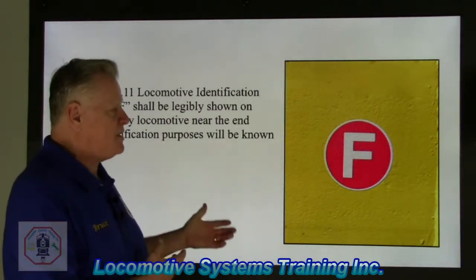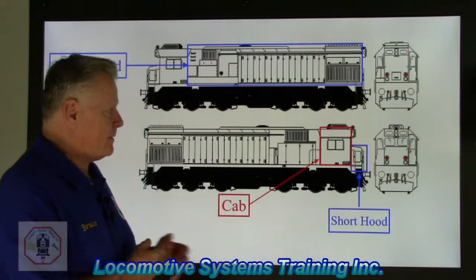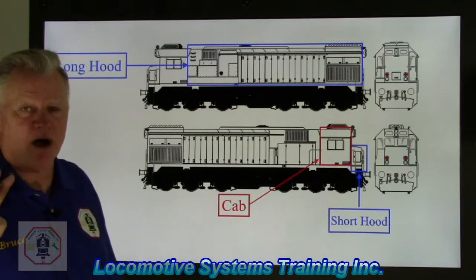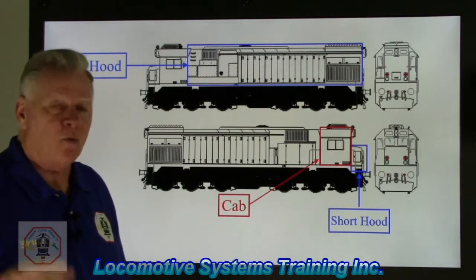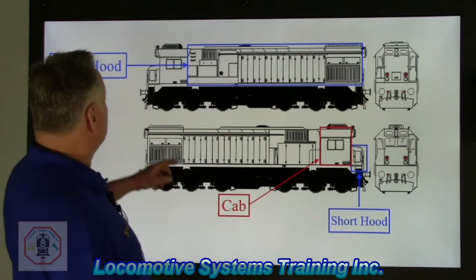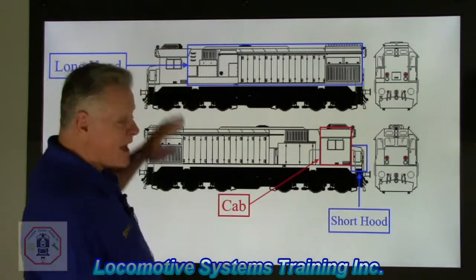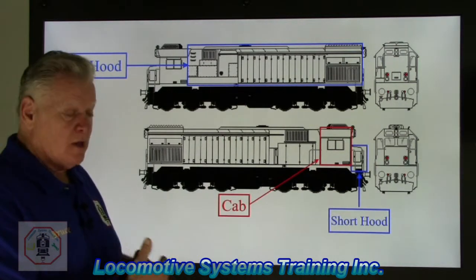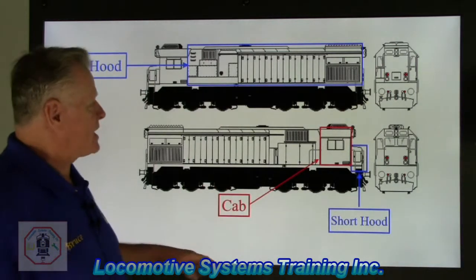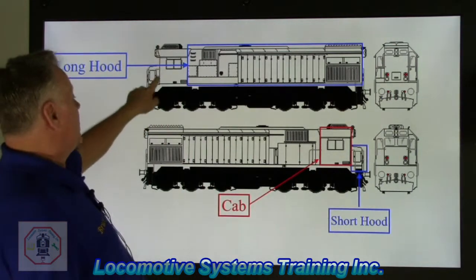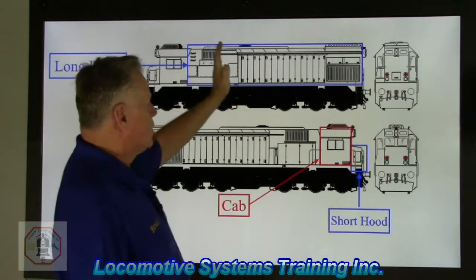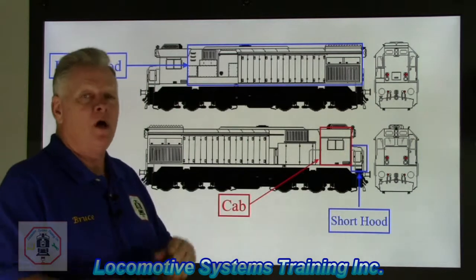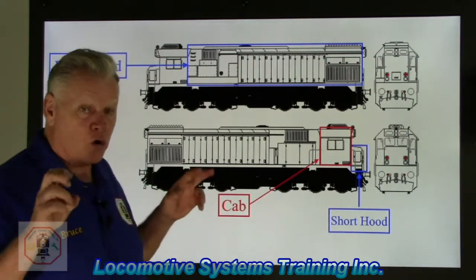We need to go over landmarks. If you look at this locomotive, there are two different types of hood that can be found on a locomotive. One is called the short hood, one is called the long hood. The cab determines where all this stuff goes. Here's the cab right here. This is what they call the long hood — the main generator compartment is in it, the engine compartment, the air compressor compartment. All those components are affixed in the long hood end.